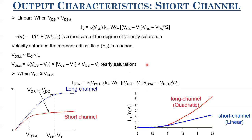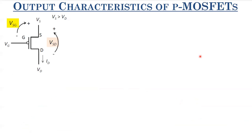If you go measure any MOSFET from the market today, you will always encounter short-channel characteristics since all modern devices are short-channel. Now let us look at output characteristics of P-MOSFETs, which is often not covered in detail in books or courses. For P-MOSFET, VS > VD, VGS is negative, VDS is negative, and drain current is negative. We talk in terms of VSG and VSD to work with positive quantities.